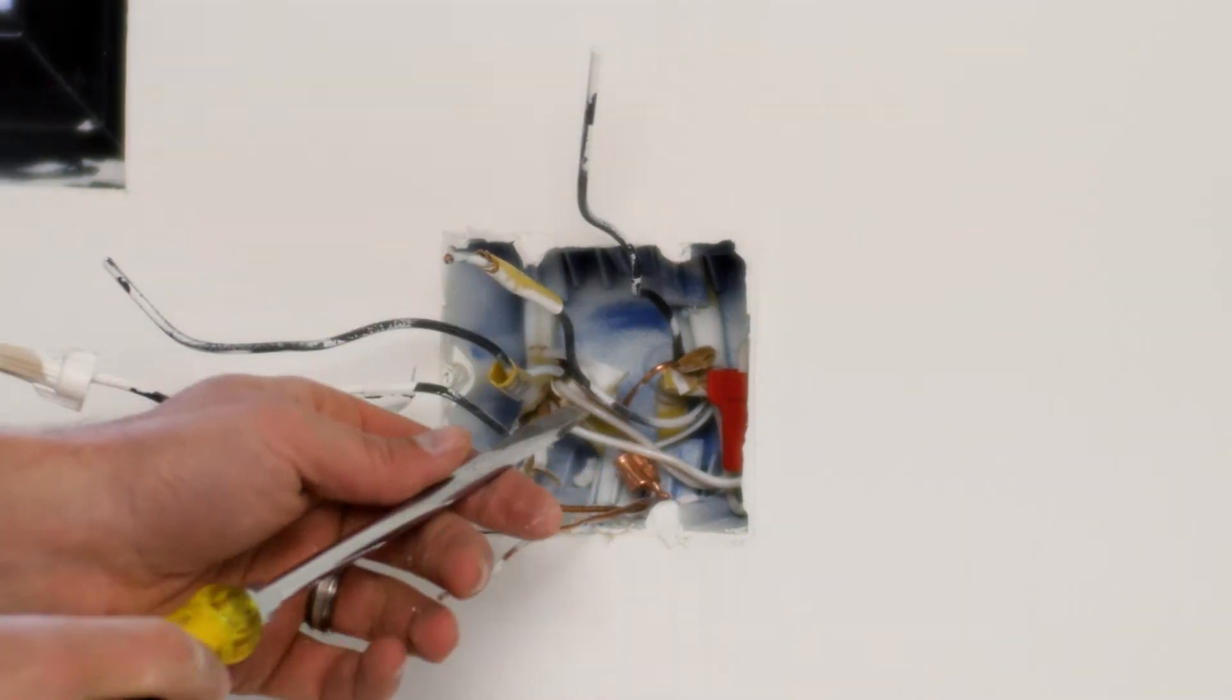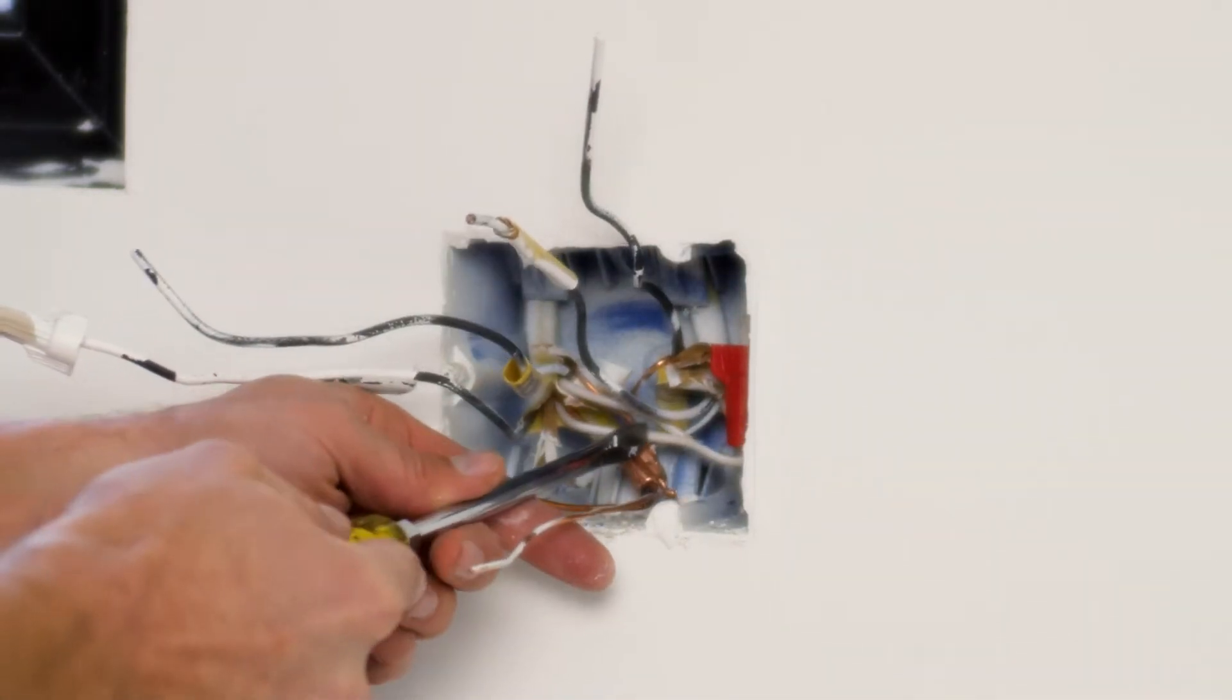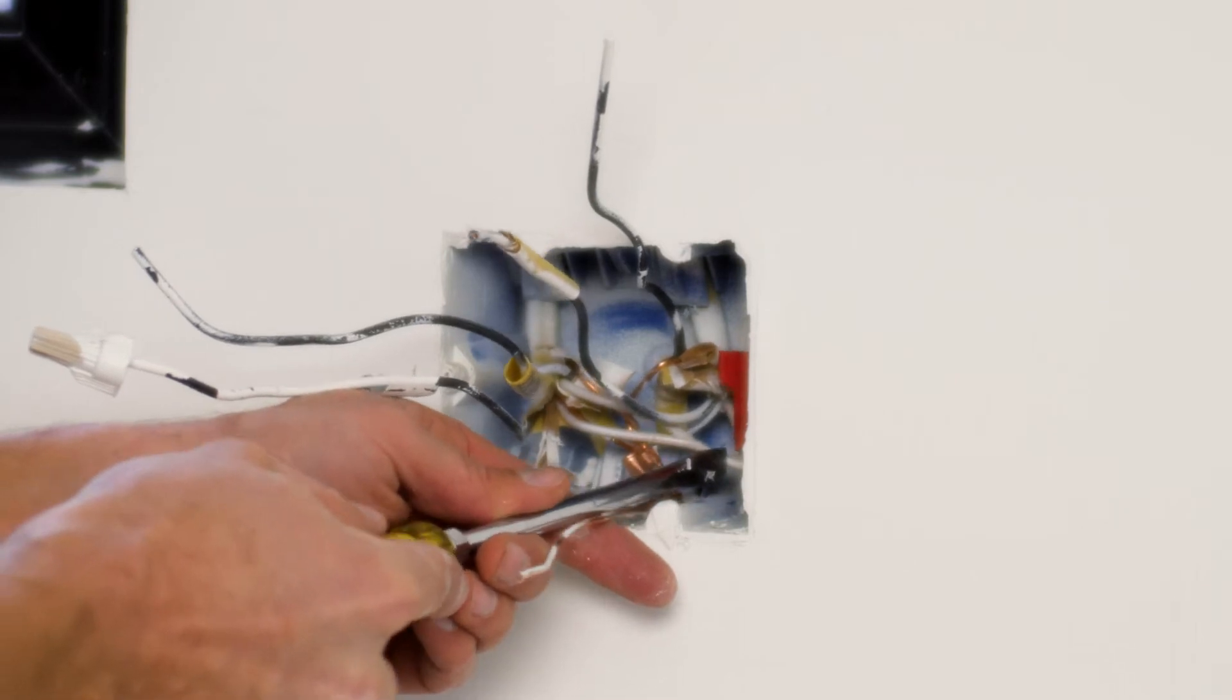I'm being mindful that my neutral doesn't get nicked on a sharp edge of my crimp sleeve. If it does, I can use one of my screwdrivers. If it is being exerted pressure on, I'll use one of my screwdrivers and just gently get it backed away from that sharp edge.